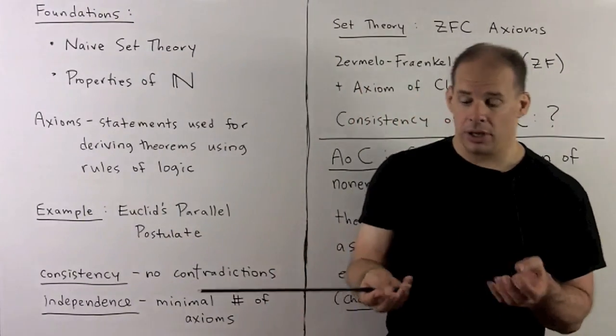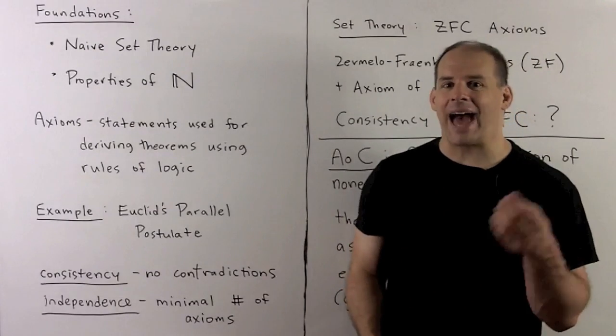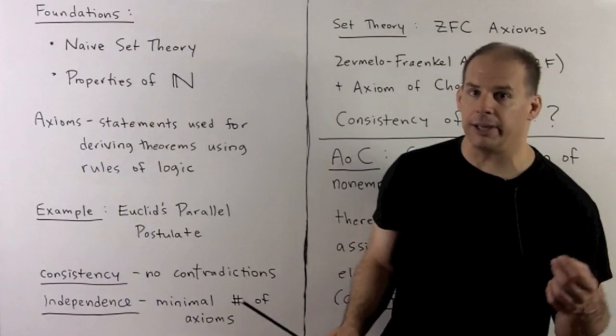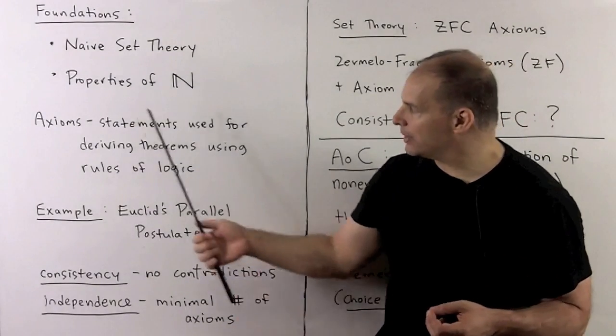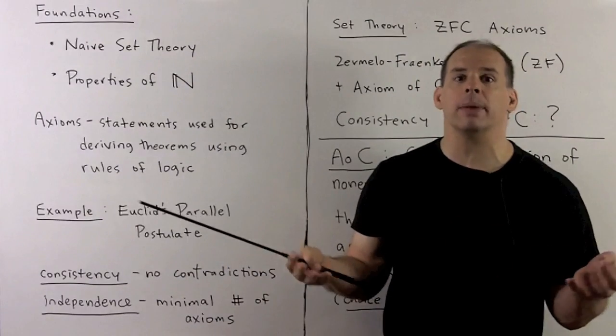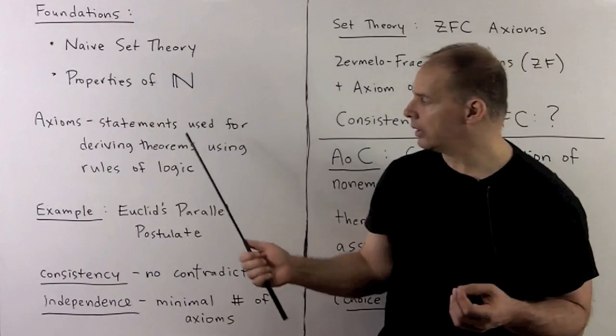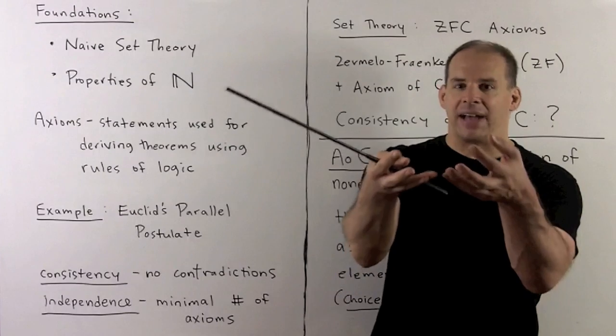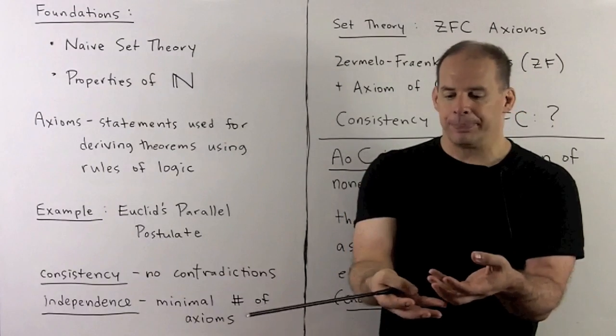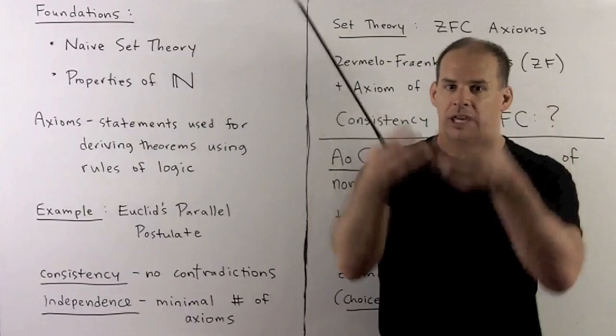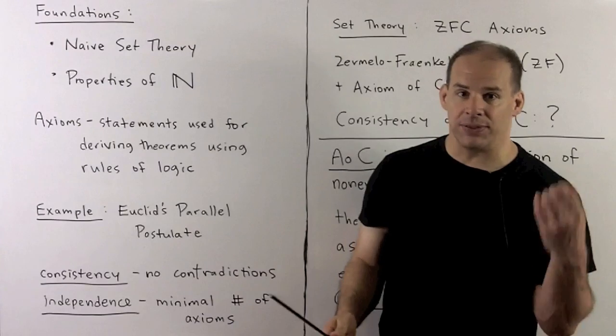Where do we begin? We start with axioms. If we have a theory of interest, axioms are the assumptions for that theory. These are the statements that we derive theorems from by applying the rules of logic. We have a collection of axioms, apply the rules of logic, get theorems, keep repeating the process, and that gives a theory.